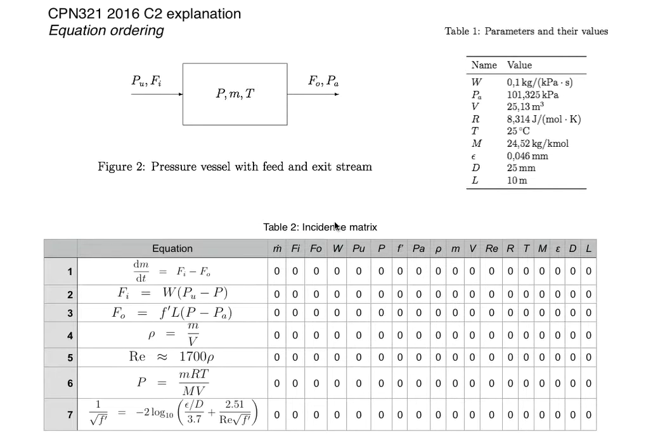Equation ordering. Now I'm going to use this example from C2 where we have a pressure vessel with a feed and exit stream and we're going to assume that we are working with an ideal gas.